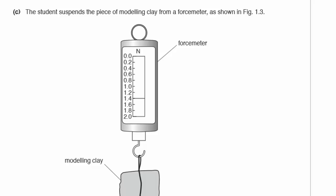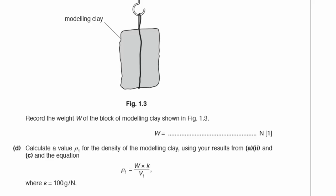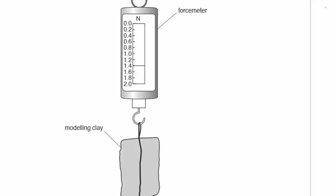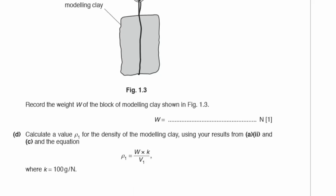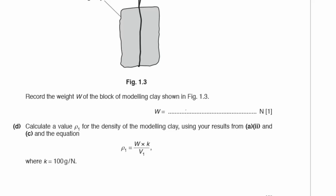Part C: the student suspends the modelling clay from a force meter as shown in figure 1.3. Record the weight W shown on that force meter — it reads 1.4 newtons. The unit is already provided in the question, but always check and include units if they're not given.